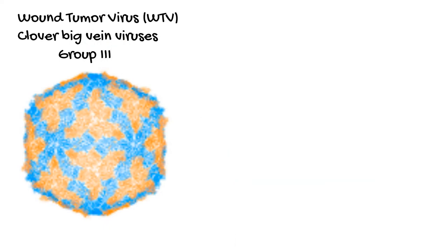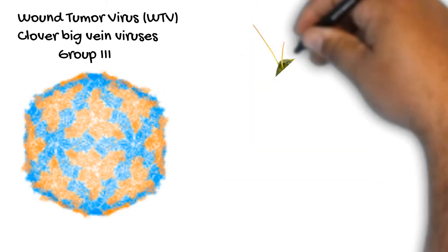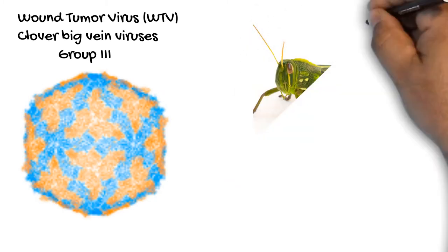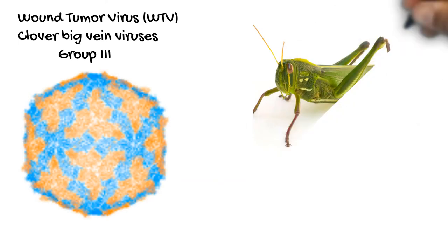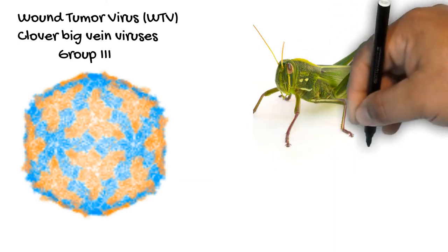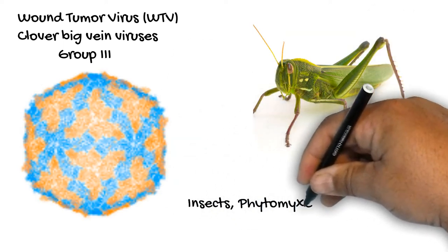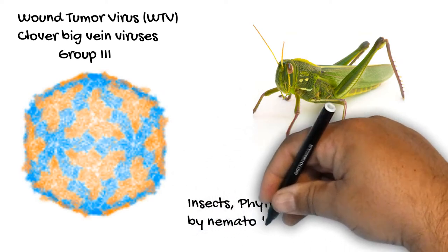Gall formation caused by other pathogenic organisms has also been very well documented. This includes insects, parasitic protists, and root-knot disease by nematodes. All of these abnormal outgrowths cause serious damage to agricultural crops and fruit plants, but the underpinning molecular mechanisms remain largely unknown.